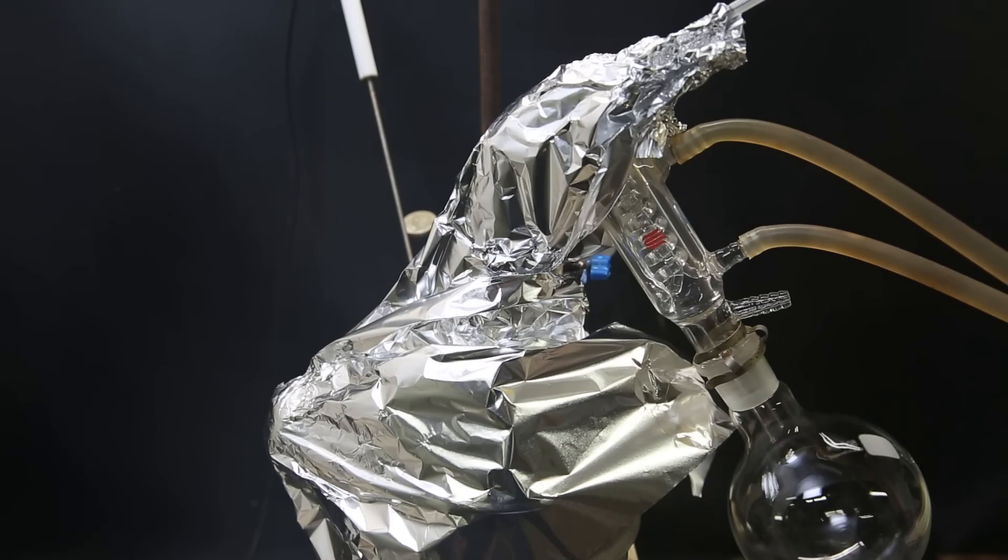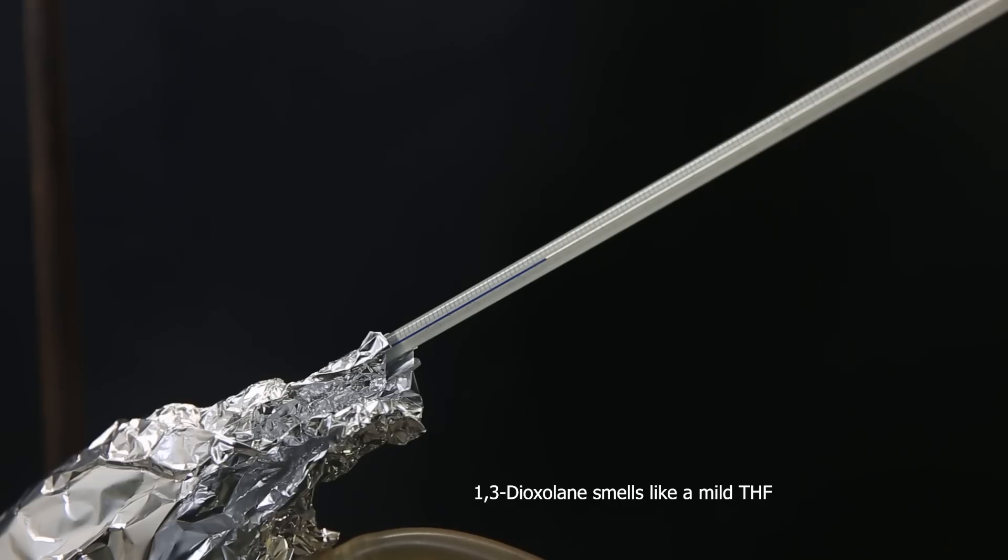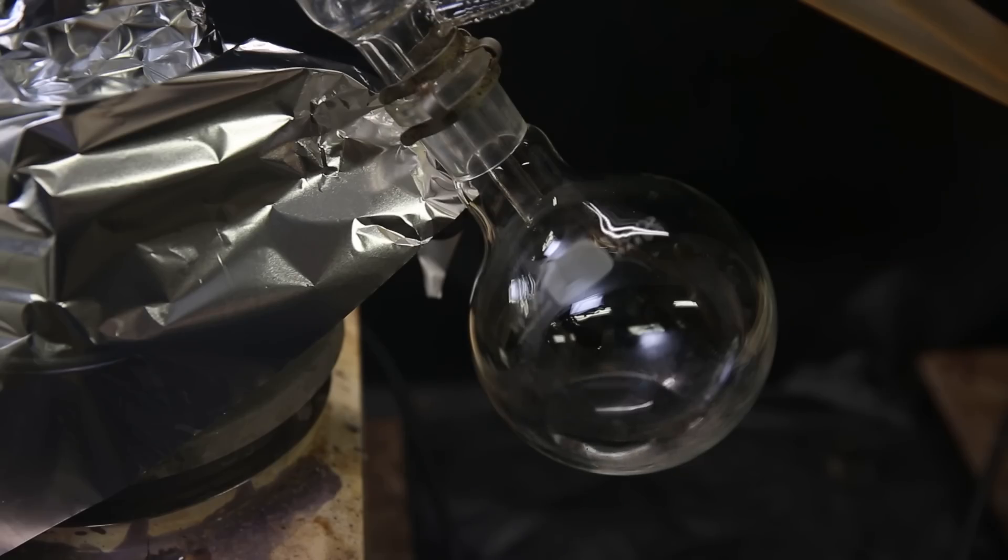The first bit that distills over, I discard, since it likely contains impurities, and it smells more like acetaldehyde. I then keep collecting the distillate around 74°C, and it steadily comes over.